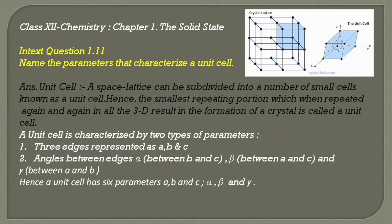Hence, a unit cell has six parameters: a, b, and c, alpha, beta, and gamma.